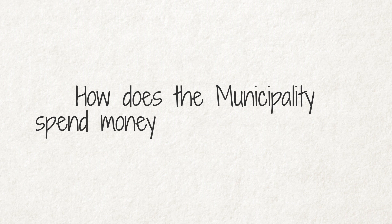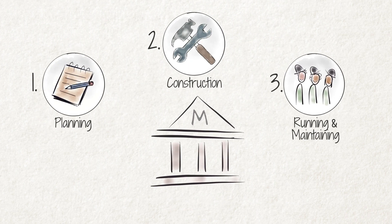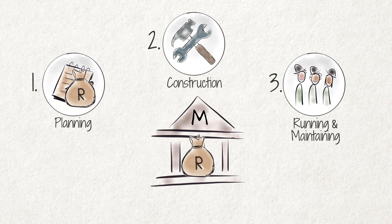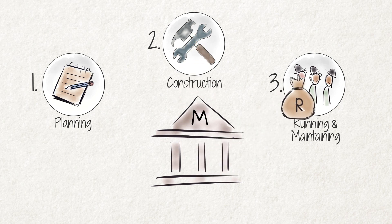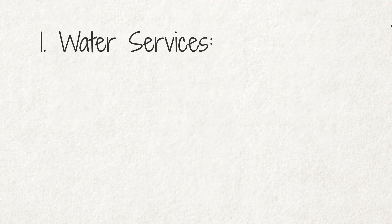How does the municipality spend the money it has on services? The municipality has to take many different steps in order to provide services, and each step has costs associated with it. These costs get paid from the overall funds available to the municipality. Let us use water services as a practical example.